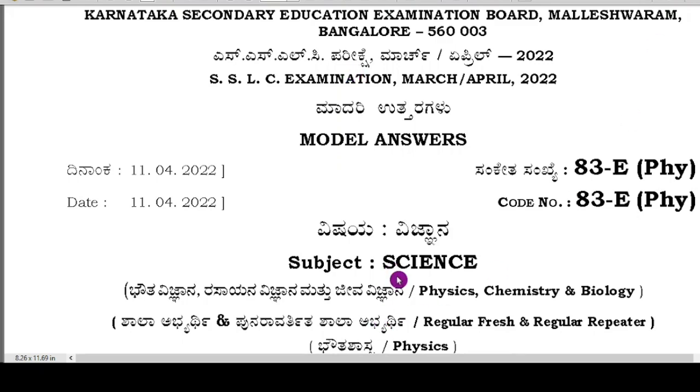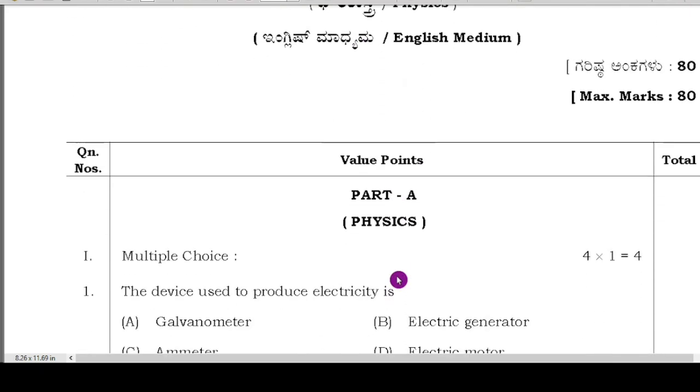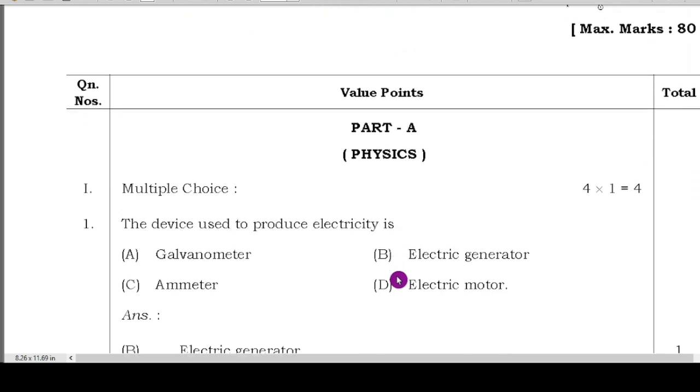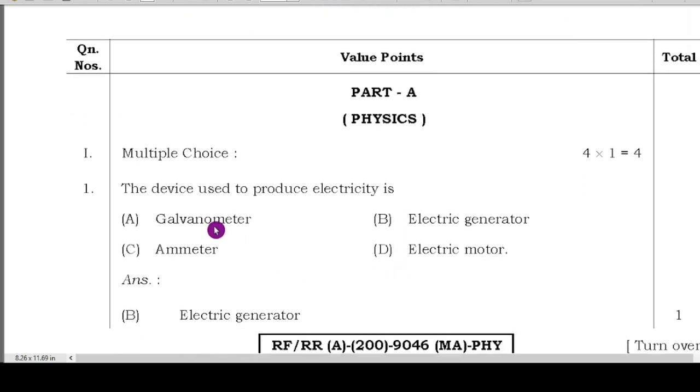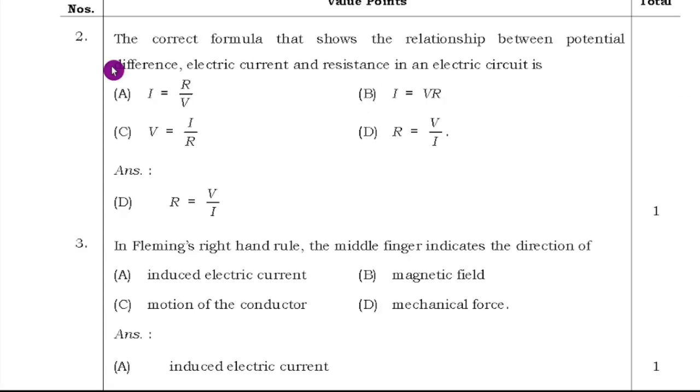Subject science. First you have part A, physics. In that multiple choice questions will be there. The device used to produce electricity is galvanometer, electric generator, ammeter, electromotor. Answer is electric generator because electric generator is the device to produce electricity.